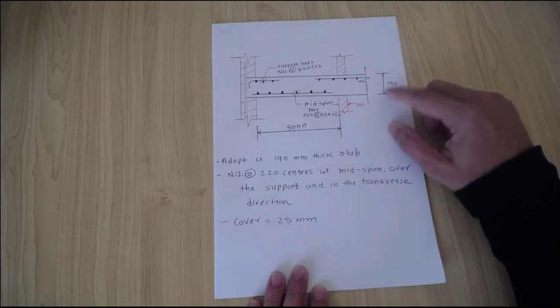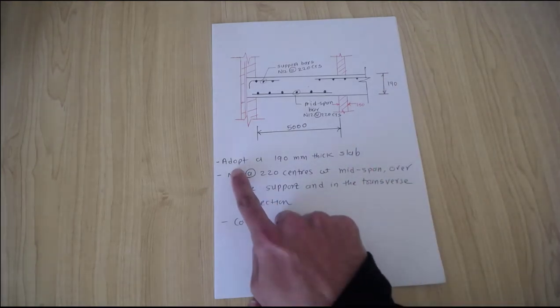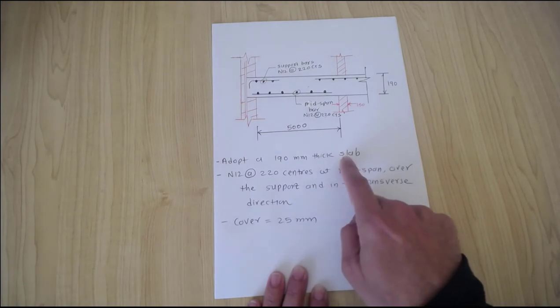So 190 millimeter is adequate slab thickness. We take a 190 millimeter thick slab.